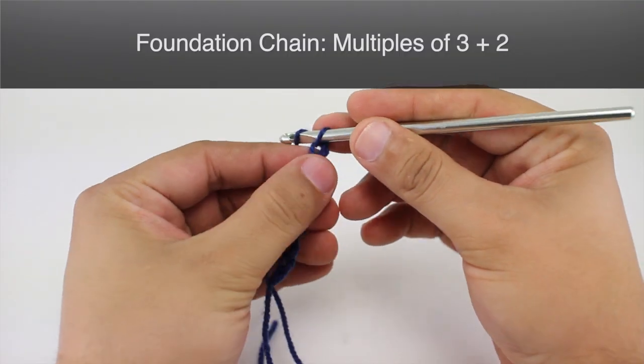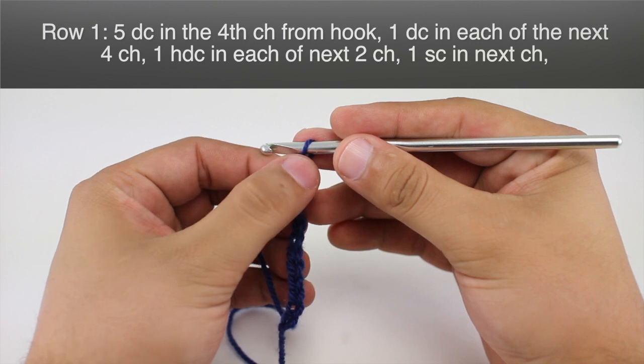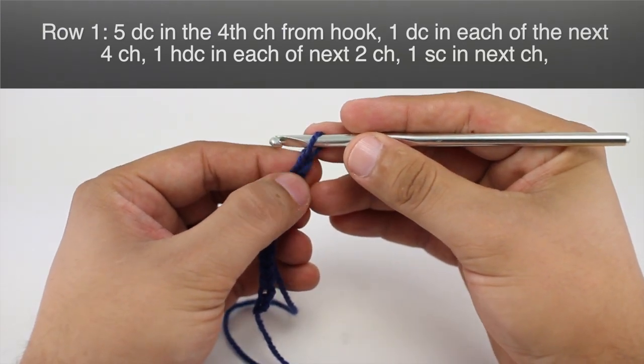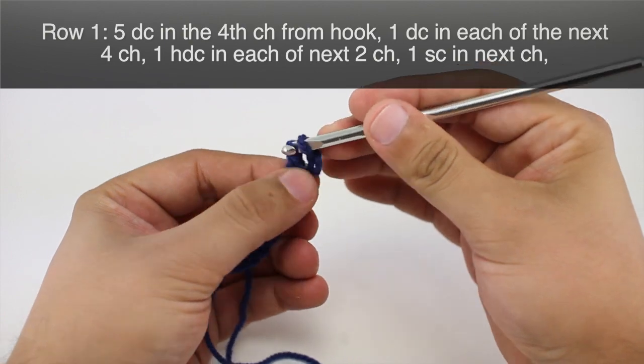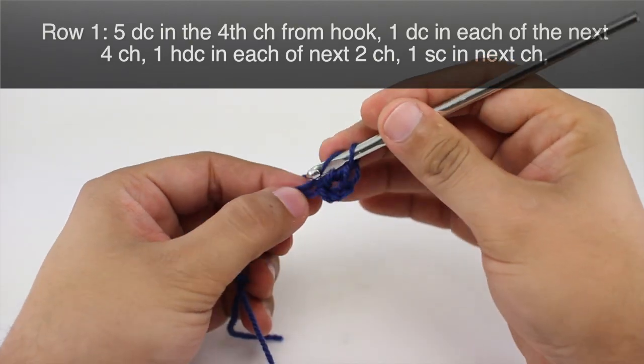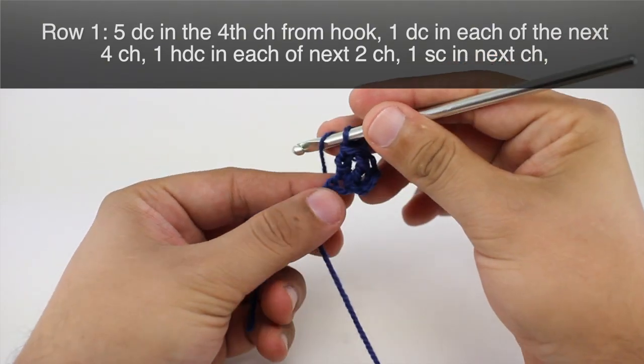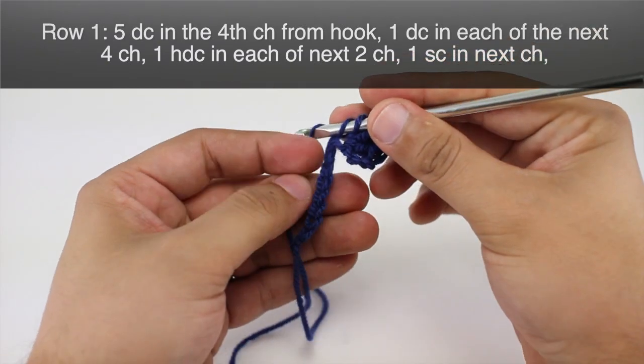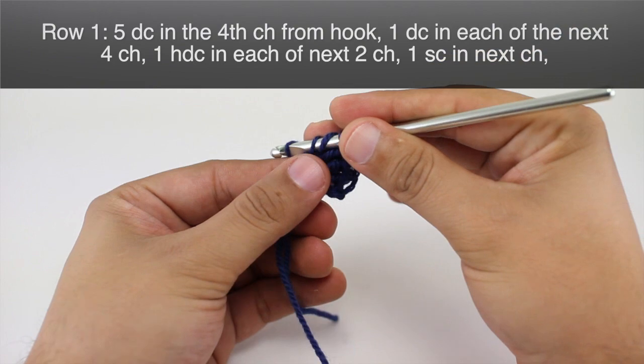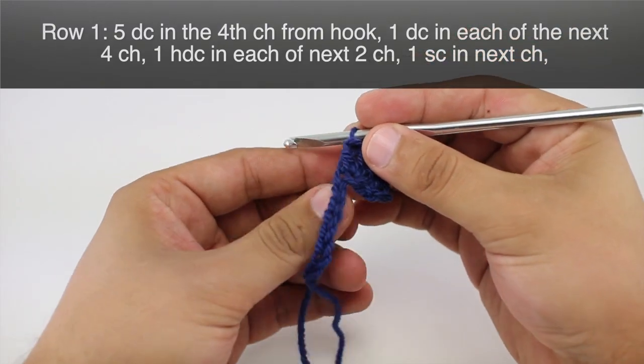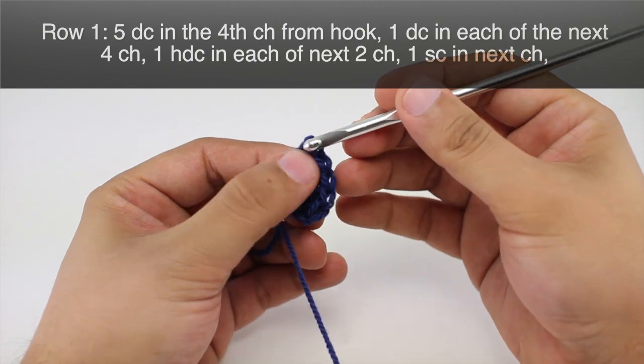To begin this stitch, you must create a foundation chain of 12 stitches. Row one: we're going to begin by doing five double crochets into the fourth chain from the tip of our hook. So we've got one, two, three, four, and that's five.